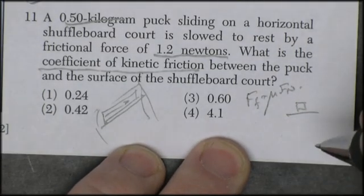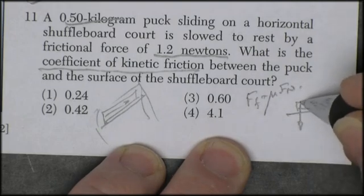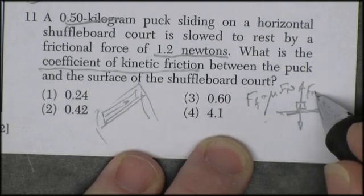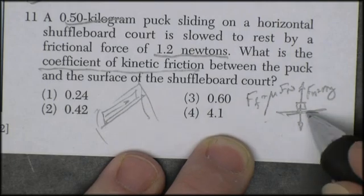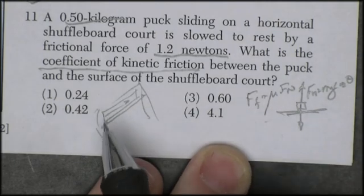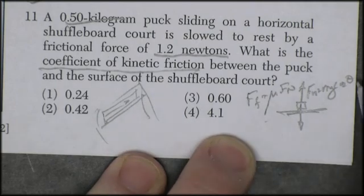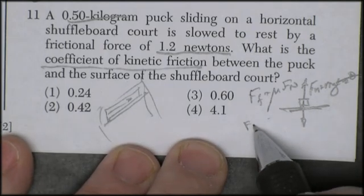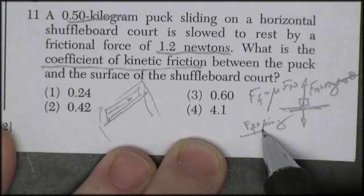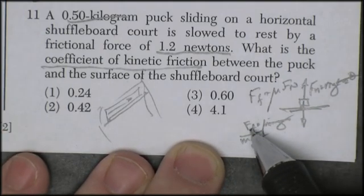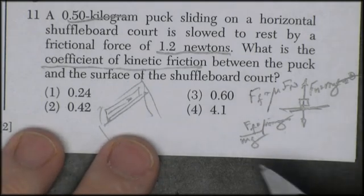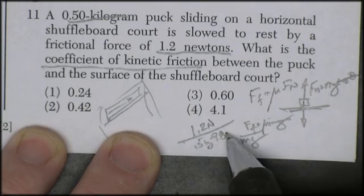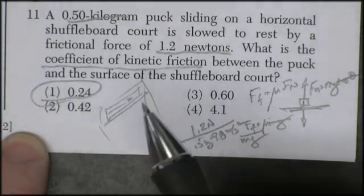The force normal is equal to the weight, mg, times the angle of the ramp that you're sitting on, cosine theta. And if you're on a shuffleboard court, it better be perfectly flat. So, cosine of zero is 1 multiplied by 1. It's equal to mg. So, I can say that my force of friction is equal to mu mg, and divide both sides by mg. My coefficient of friction is equal to force of friction divided by the weight, mg. So, 1.2 newtons divided by 0.5 kilograms times 9.8. I'm going to guess that the correct answer is this. Yes.